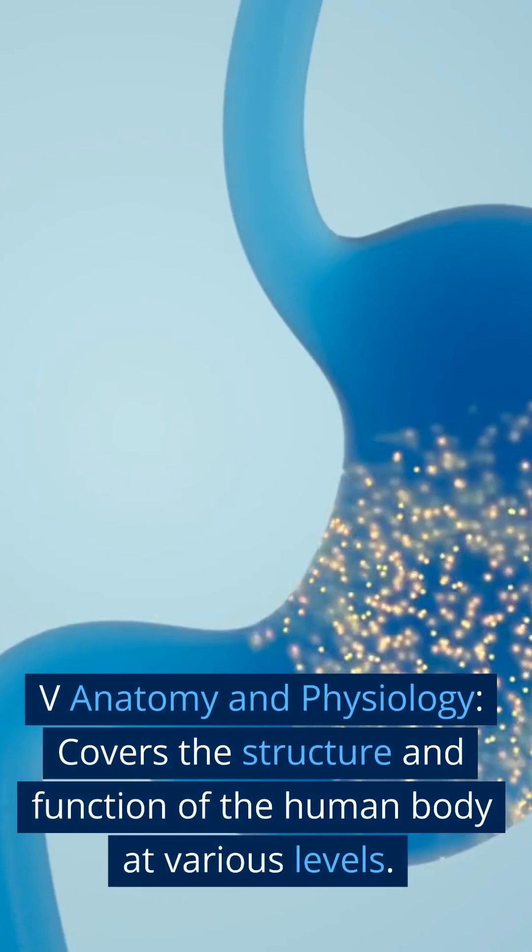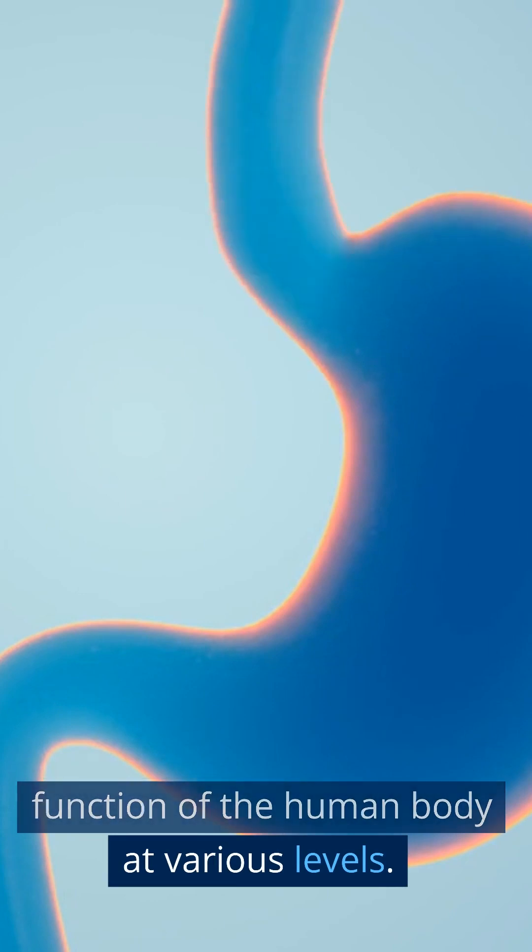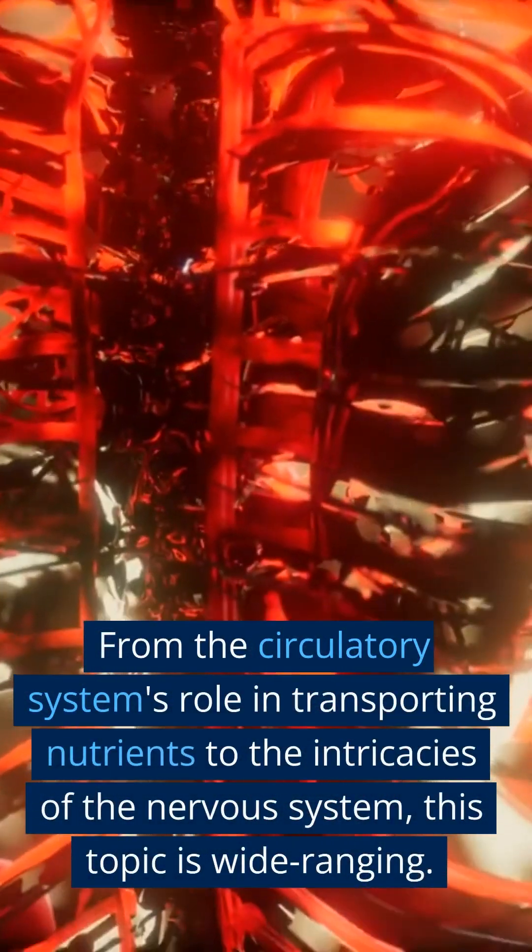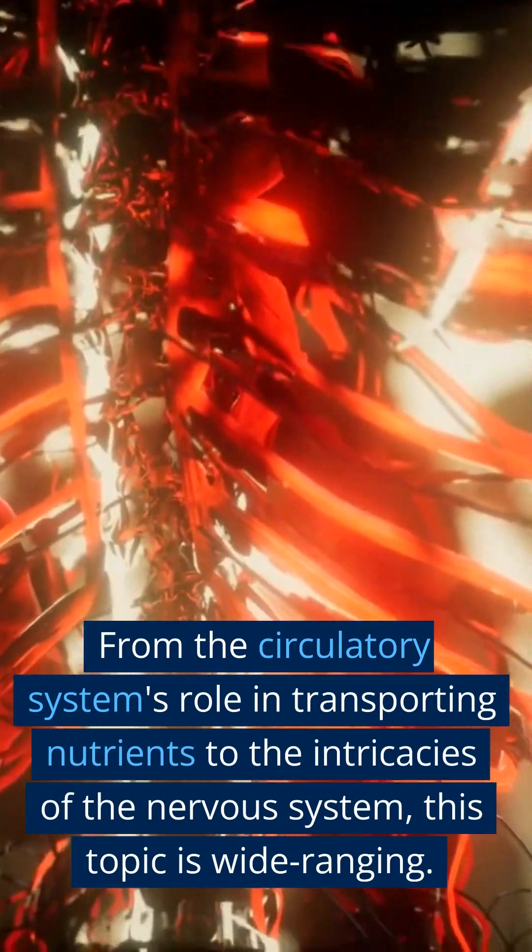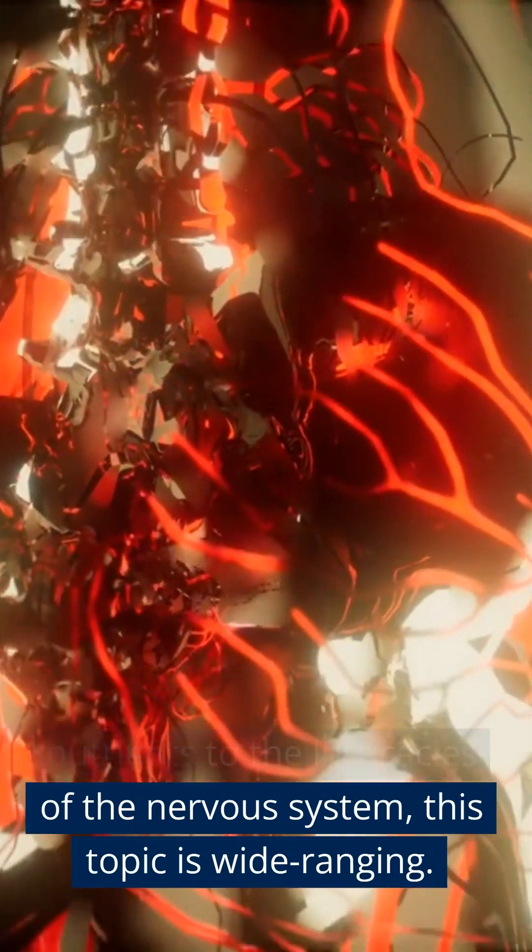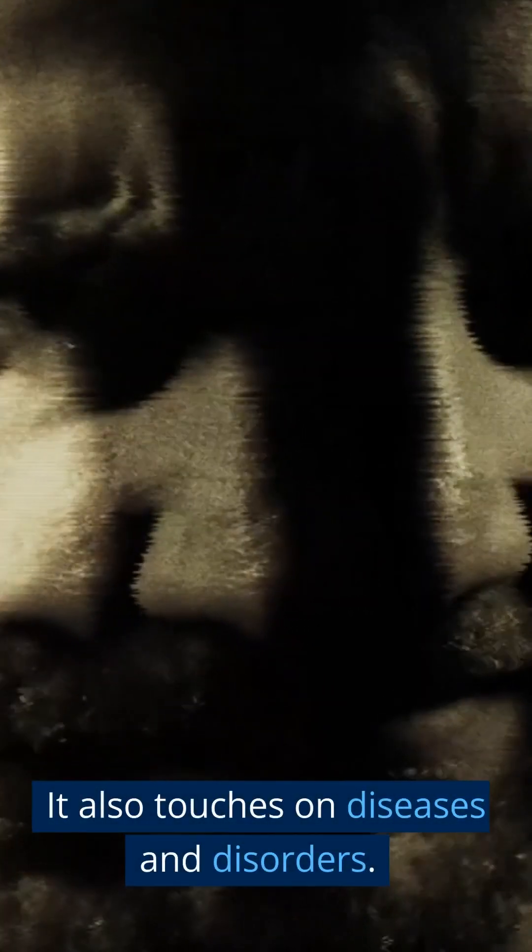Five: Anatomy and Physiology covers the structure and function of the human body at various levels. From the circulatory system's role in transporting nutrients to the intricacies of the nervous system, this topic is wide-ranging. It also touches on diseases and disorders.